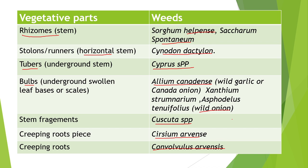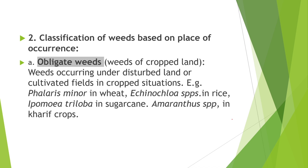Second classification is based on place and occurrence — classified into obligate, facultative, and xerophytic weeds. Weeds found in cultivated fields are known as obligate weeds — they compete with the main crop. Examples are Phalaris minor in wheat, Echinochloa species in rice, Ipomoea trilobata in sugarcane, and Amaranthus species in curry crops.